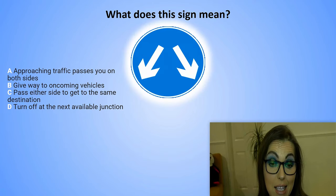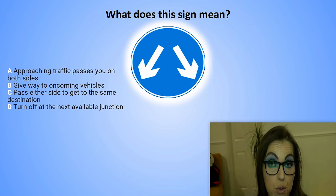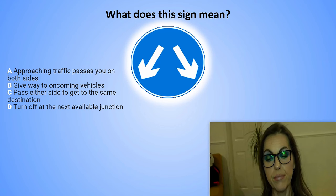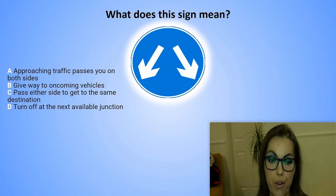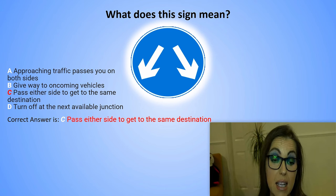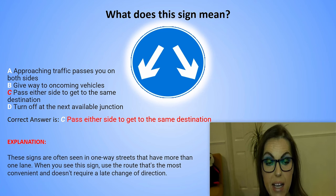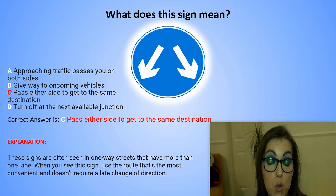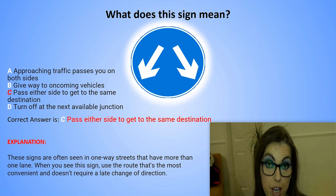What does this sign mean? A. Approaching traffic passes you on both sides. B. Give way to oncoming vehicles. C. Pass either side to get to the same destination. D. Turn off at the next available junction. The correct answer is C. Pass either side to get to the same destination. Explanation: These signs are often seen in one-way streets that have more than one lane. When you see this sign, use the route that's the most convenient and doesn't require a late change of direction.